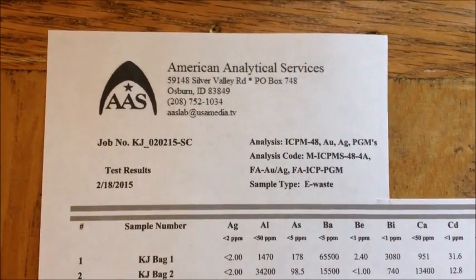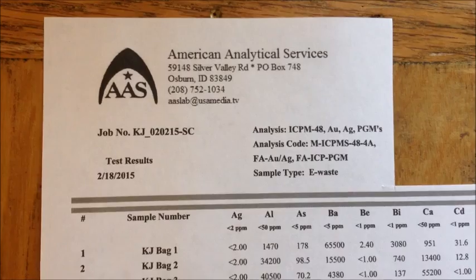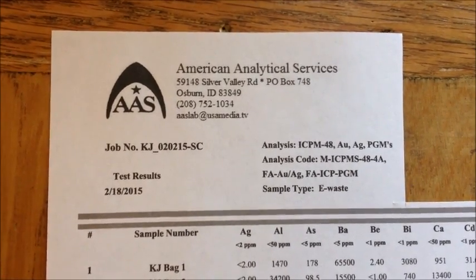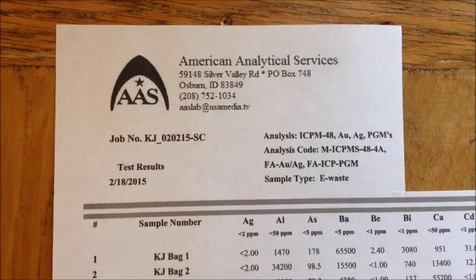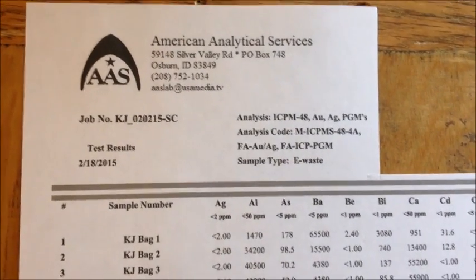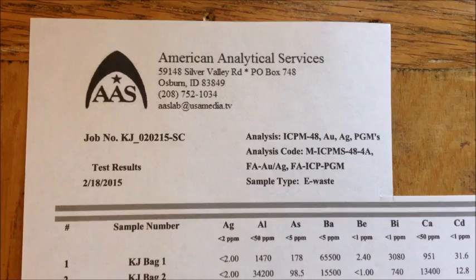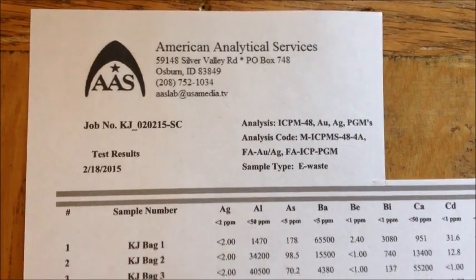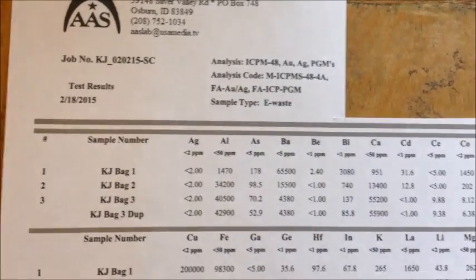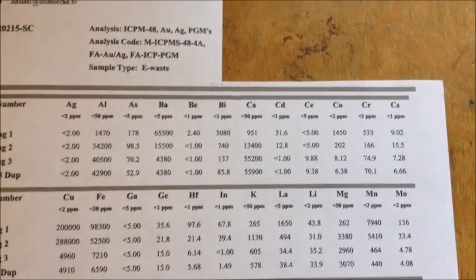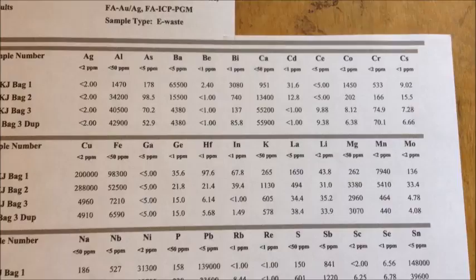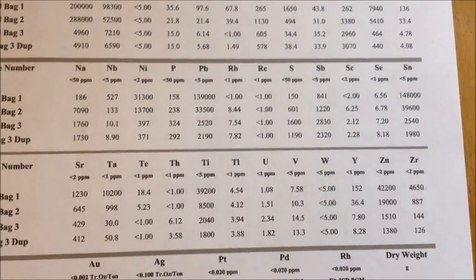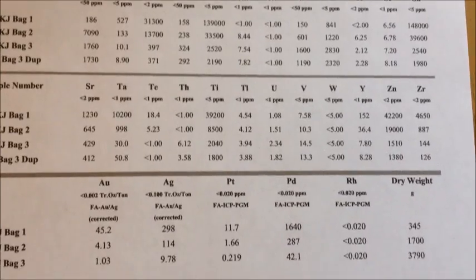We've received our assay results back from the shaker table test we ran. And we sent our samples off to American Analytical in Osborne, Idaho. They're our assayers, they do a great job. And we did a 48 element ICP and some fire assays on the precious metals with an ICP finish. So you can see, I'll just scan over this real quick. There's a lot of information here, but all the elements that were tested are listed there in parts per million.